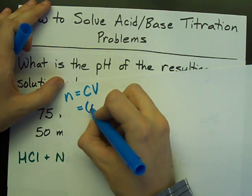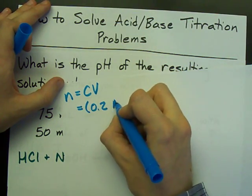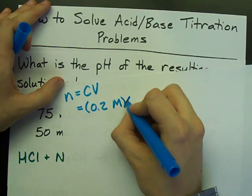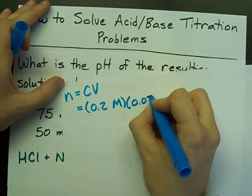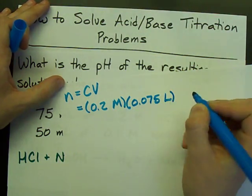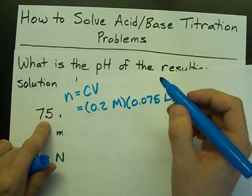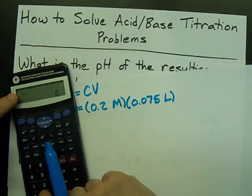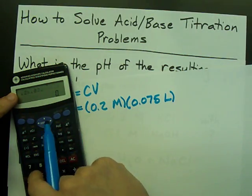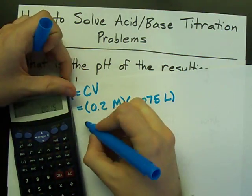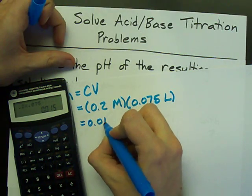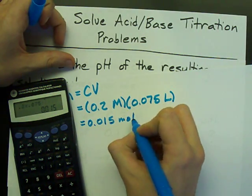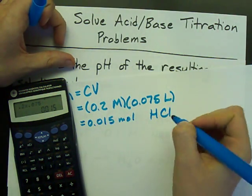And the volume was 0.075 liters. I divided milliliters by a thousand to get that. Doing this on my calculator, 0.2 times 0.075, I get 0.015 moles of that HCl.